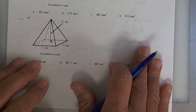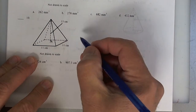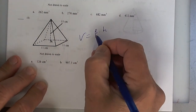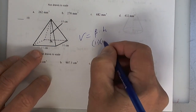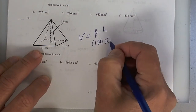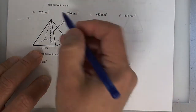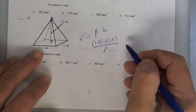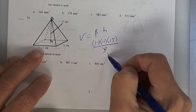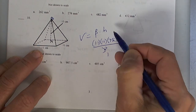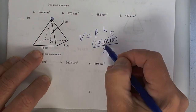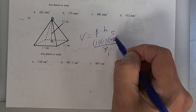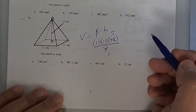Number 10 is a pyramid. Volume equals big B times H. The base is a square, so that's 11 times 11 times the height, which is 15. But since it comes to a point, you have to divide by 3. Three goes into 15 five times, so take 121 — which is 11 times 11 — times 5. That gives me 605. And it's right there.